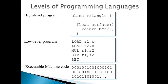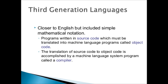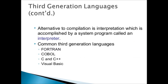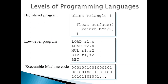Next we have high level language. High level language is very similar to our own language, English. It uses common English words and mathematical symbols, which is why it's called high level language. For example, it uses mathematical terms like asterisk and slash, and English words like 'return' and 'float'. So that is high level language.